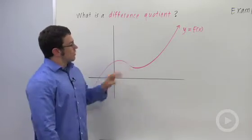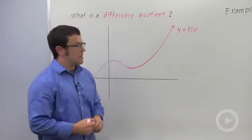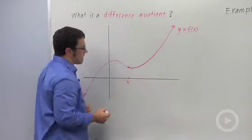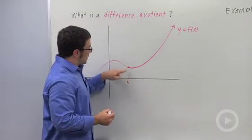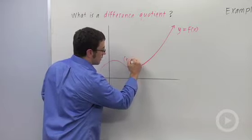Well, let's start with the graph of a function, just an arbitrary function, y equals f of x. And let's pick a point on the graph. So let's call this x. If this is the x coordinate, then the coordinates of this point are going to be x, f of x.